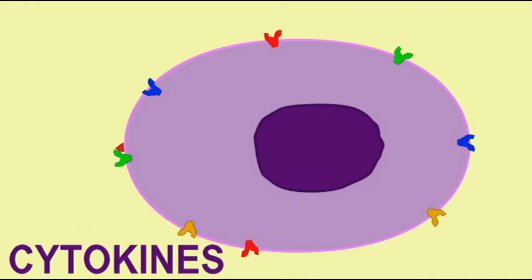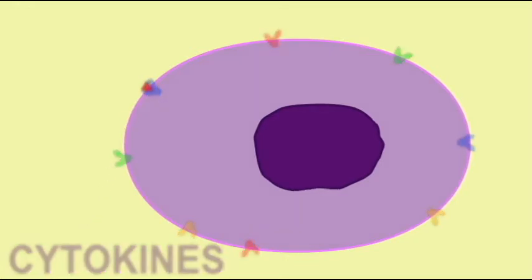They have to transform from an unspecialized cell to a specialized cell, a liver cell, a neuron, a muscle cell, etc.